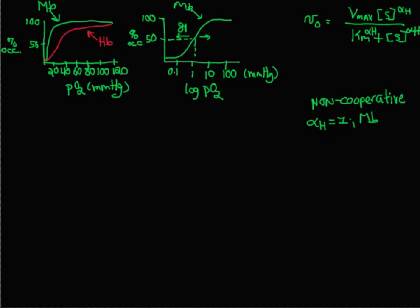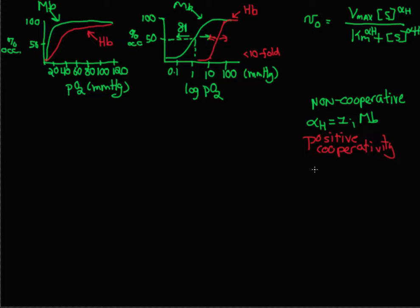With hemoglobin, you get that S-shaped curve on the linear plot. And you can see the sensitivity to oxygen on the log plot. If we wanted to measure the sensitivity, we would look at how much oxygen it takes to go from 10% occupancy to 90% occupancy, and we would see that it's less than a 10-fold increase in oxygen. And that's what you observe with positive cooperativity. Hemoglobin is more sensitive to the concentration of oxygen, and the Hill slope is going to be more than 1.